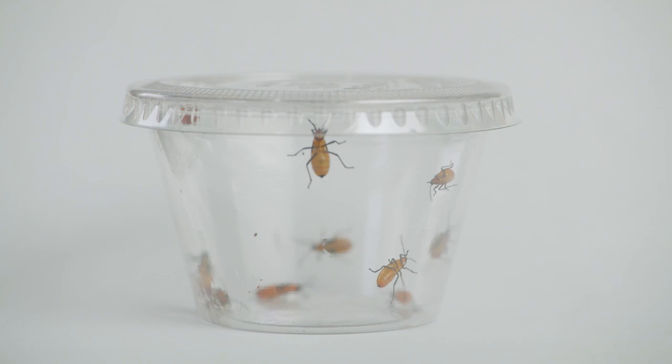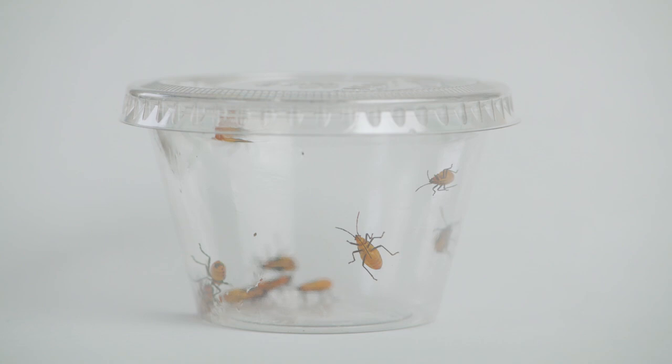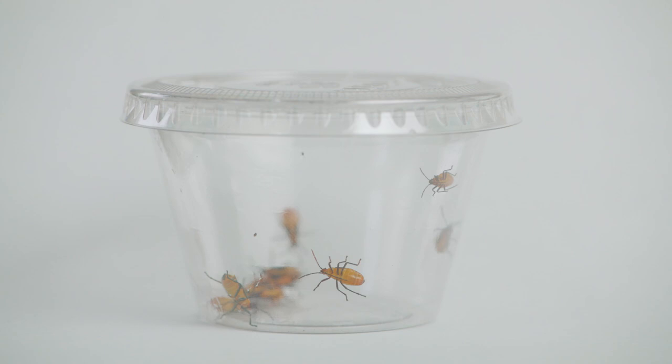Unlike adults, nymphs do not have wings. They will undergo several molts. Each stage between molts is called an instar. Milkweed bugs go through five instar phases.